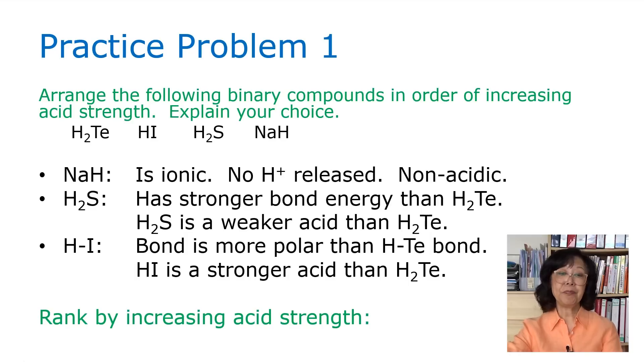Therefore, the ranking would be the strongest is hydroiodic acid HI, followed by H2Te, followed by H2S, followed by NaH. Remember, when we compare across, we're looking at the bond polarity. And when we're comparing downward in a family group, we are looking at bond energy for comparison of acid strength.